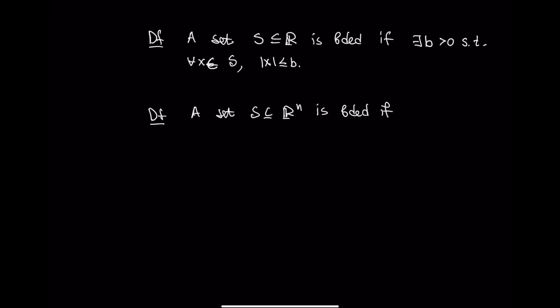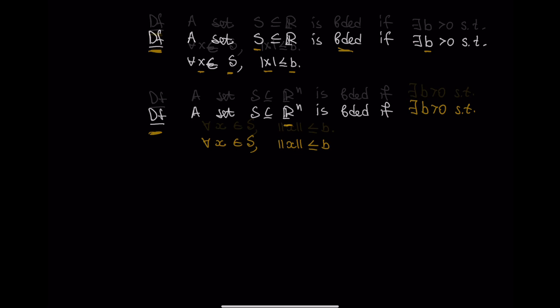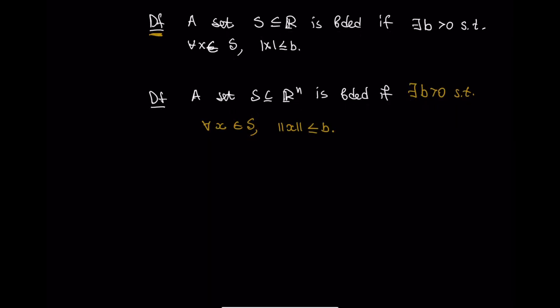Now after discussing what Rn is, we can formulate what it means for a set in Rn to be bounded. Recalling that a subset of real numbers is bounded if there exists a positive number such that every element has absolute value less than that number, we define: a set S in Rn is bounded if there exists a positive number B such that for every element x in S, the norm of x is less than or equal to B. In the next part of this discussion, in video part two, we will give examples of bounded sets in Rn and discuss how to prove that a set in Rn is bounded.